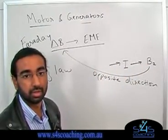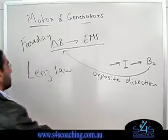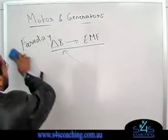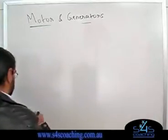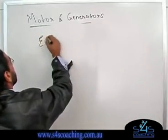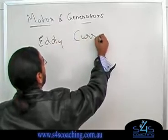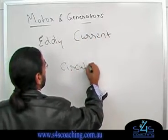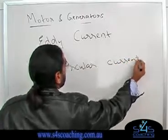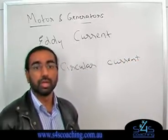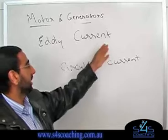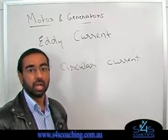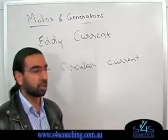The next concept is eddy currents, which are almost a consequence of Lenz's Law. Eddy currents are simply circular currents in bulk metal. As a consequence of Lenz's Law, eddy currents are generated — they are just currents that go around in a circle.